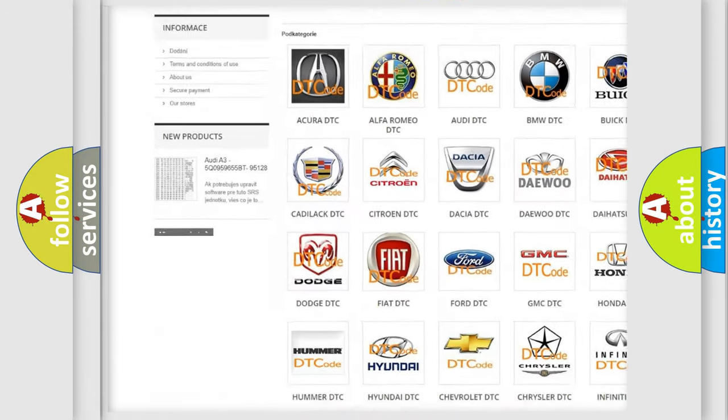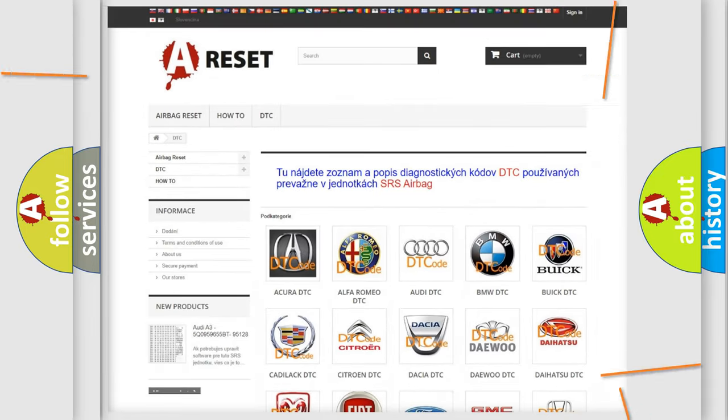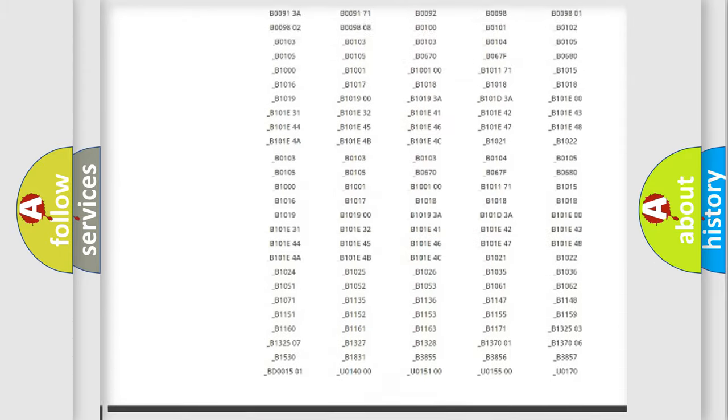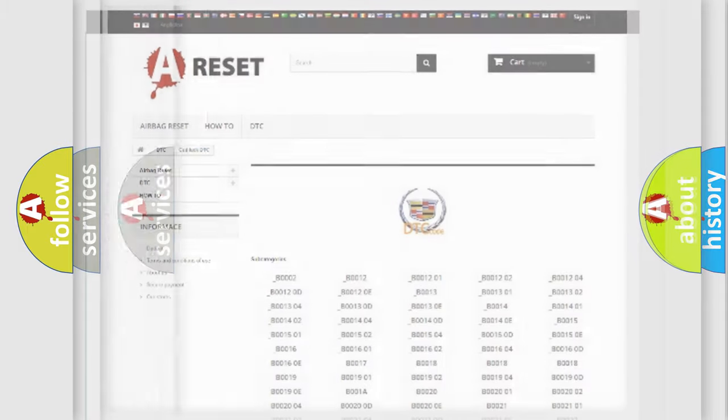Our website airbagreset.sk produces useful videos for you. You do not have to go through the OBD2 protocol anymore to know how to troubleshoot any car breakdown. You will find all the diagnostic codes that can be diagnosed in Cadillac vehicles. Also many other useful things.